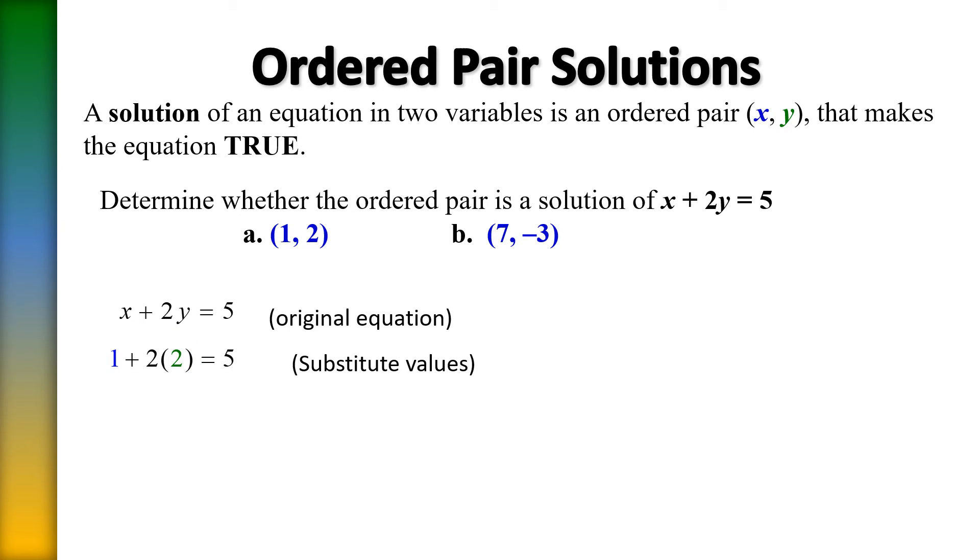So first, let's do order of operations. Two times two is four, and one plus four does equal five. So the left side now equals five. Five is the same as five. And since it left me with a true statement, that is my proof that the ordered pair of one comma two is a solution to the equation.